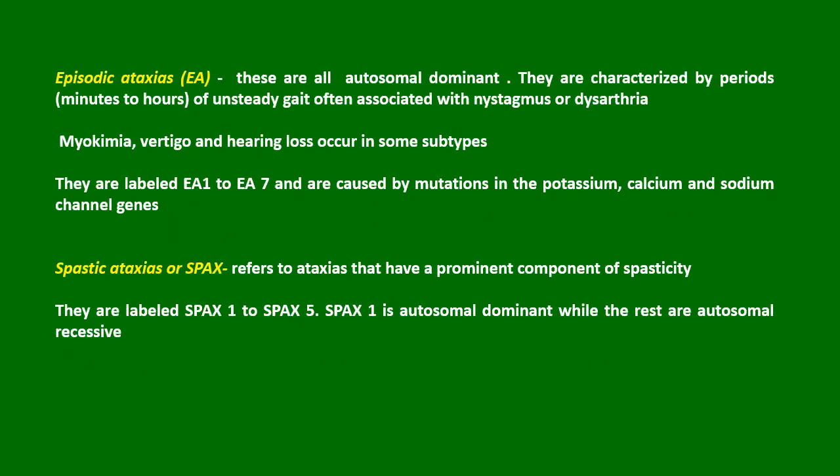Episodic ataxias are all autosomal dominant. They are characterized by periods from minutes to hours of unsteady gait, often associated with nystagmus or dysarthria. Myokymia, vitiligo, and hearing loss occur in some subtypes. They are labeled EA1 to EA7 and are caused by mutations in the potassium, calcium, and sodium channel genes.